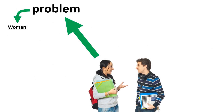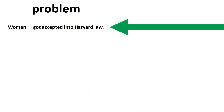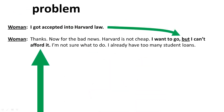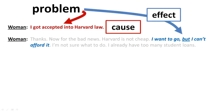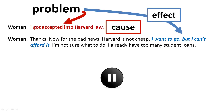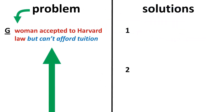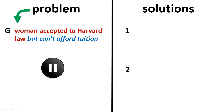As you can see from the tape script, the woman has a problem. She got accepted into Harvard Law School, but she can't afford it. Note how the problem is stated using cause and effect. On your note map, under problem, note the woman's problem using cause and effect. Red is cause, blue is effect. Pause here to read it.